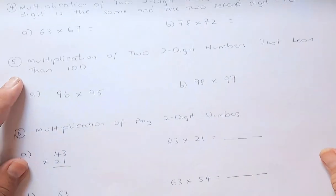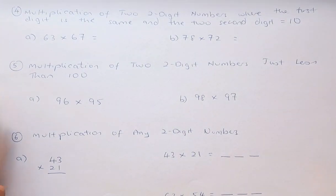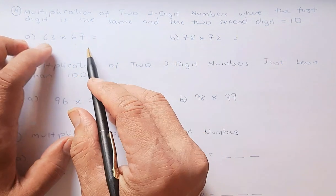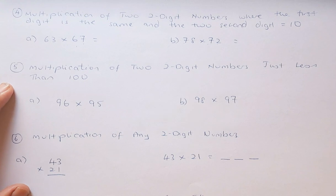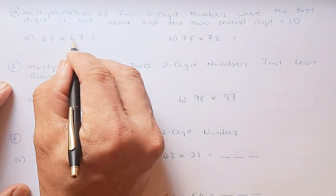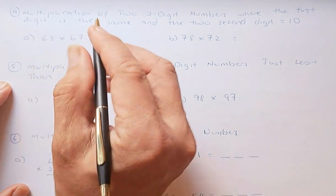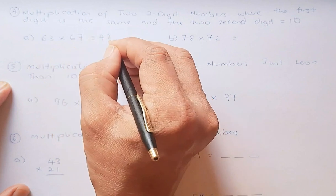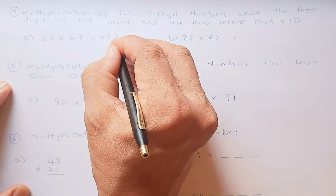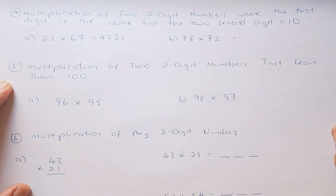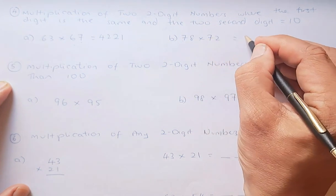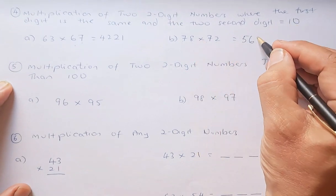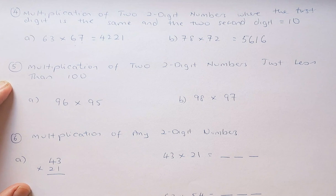Now we are going to multiply 2-digit numbers where the first digits are the same and the second digits add up to 10. For example: 63 times 67 — both start with 6, and 3 plus 7 is 10. Take 6 times 7 (increased by 1) to get 42, and 3 times 7 is 21, giving 4,221. For 78 times 72: 7 times 8 is 56, and 8 times 2 is 16, giving 5,616.